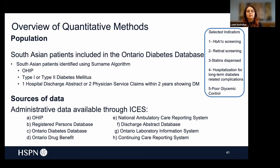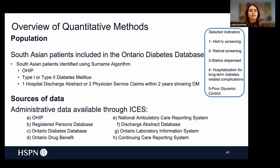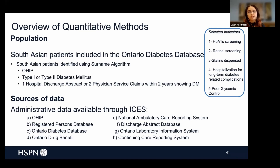The target population was South Asian populations included in the Ontario Diabetes Database. To be in this database, patients needed to be covered by OHIP and have either type 1 or type 2 diabetes — gestational diabetes was not included. To be included in the database, individuals need either one hospital discharge related to diabetes or two physician service claims related to diabetes within the past two years.